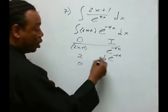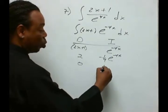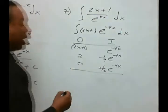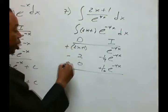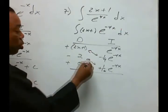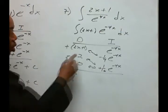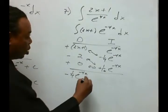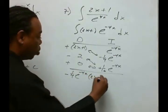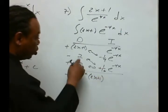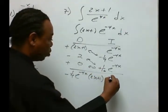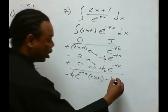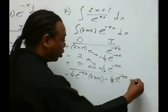Another anti-derivative will give us another negative 1 fourth, which gives us 1 over 16, e to the negative 4x. From there, plus, minus, plus. We're going to combine these two, and these two. Our constant will come from the combination of these two. So when we multiply these two, we get negative 1 fourth times e to the negative 4x times 2x plus 1. The combination of the other two — 2 times 1 over 16 — will give you negative 1 over 8, e to the negative 4x, and then plus the constant c.